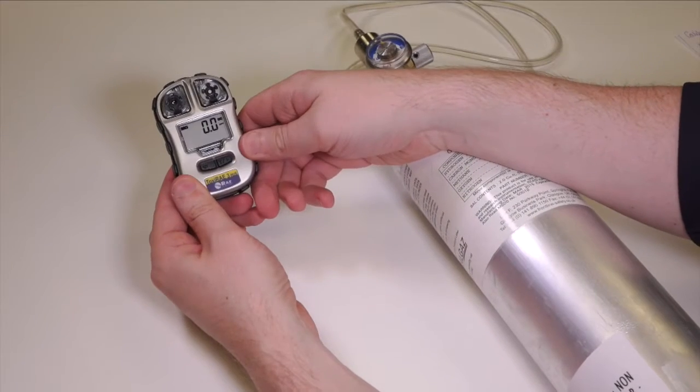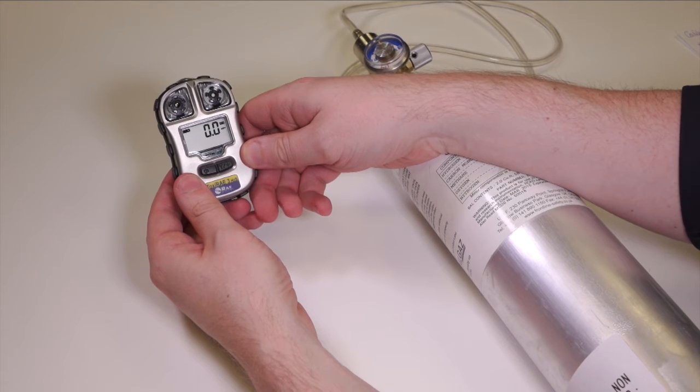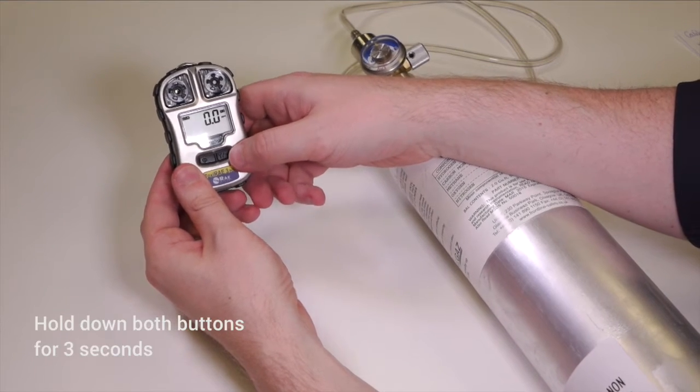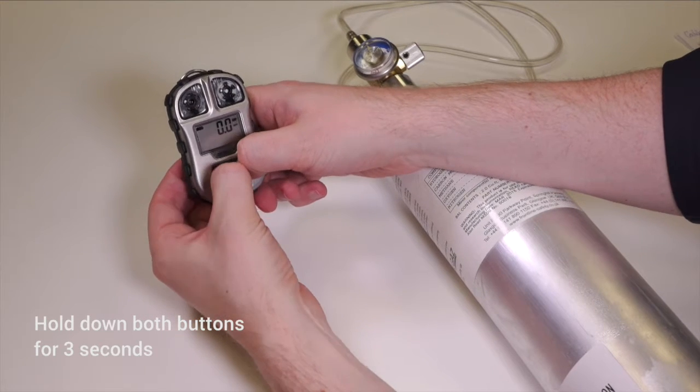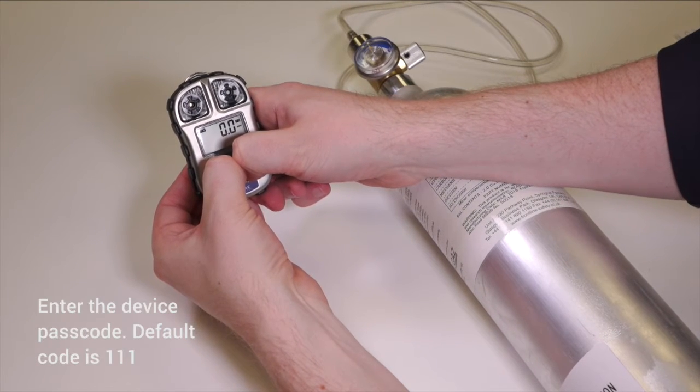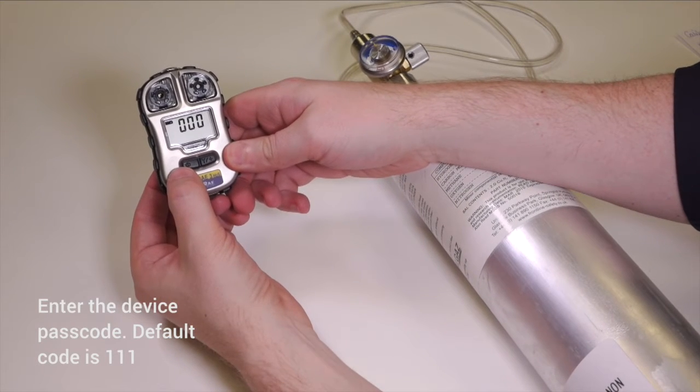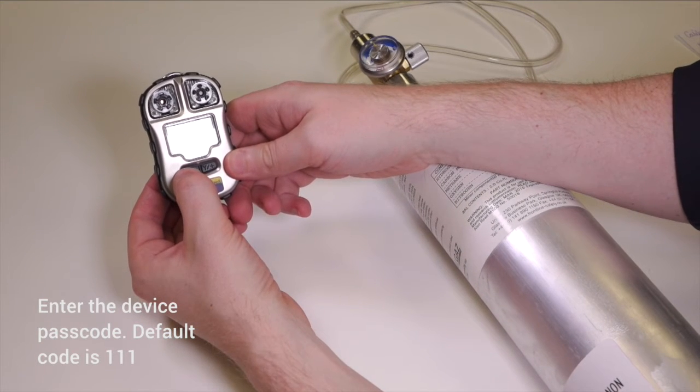To calibrate the ToxiRAE 3 H2S monitor you need to get access to the calibration menu. You do this by holding down both buttons simultaneously for around three seconds and then it'll ask us to enter a passcode. The passcode is a default setting of triple 1.